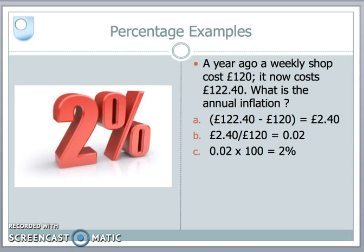Another way of looking at percentages is annual increases or decreases in prices. Say a year ago a shopping basket cost £120, but it now costs £122.40. What is the annual inflation rate? We calculate the fractional change: new value minus old value, so £122.40 − £120 = £2.40. Divide by the original value: £2.40 ÷ £120. Notice the pound signs cancel, leaving a fractional value of 0.02. Multiply by 100 and we get an inflation rate of 2%.